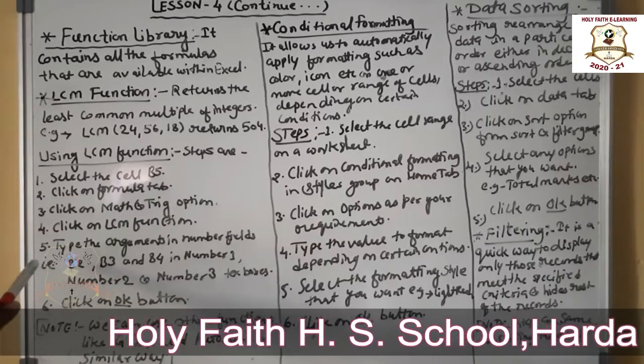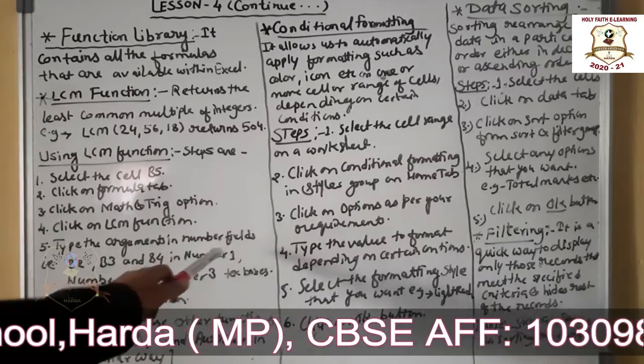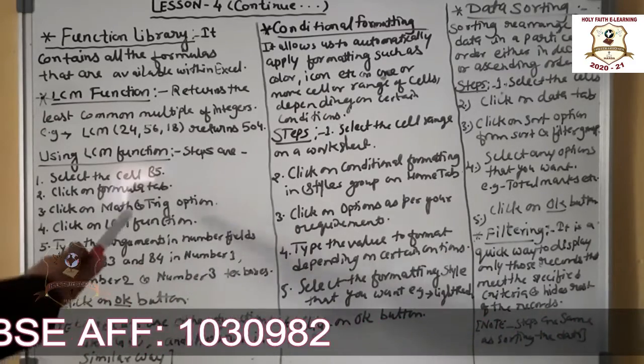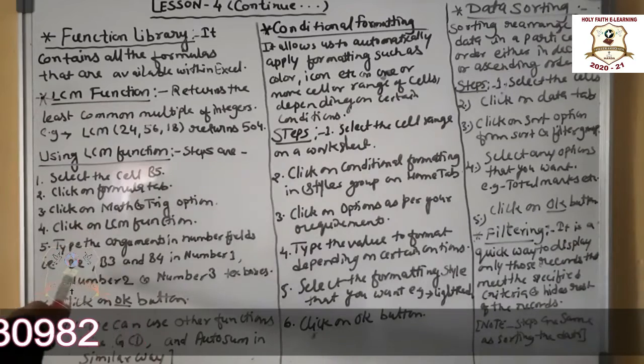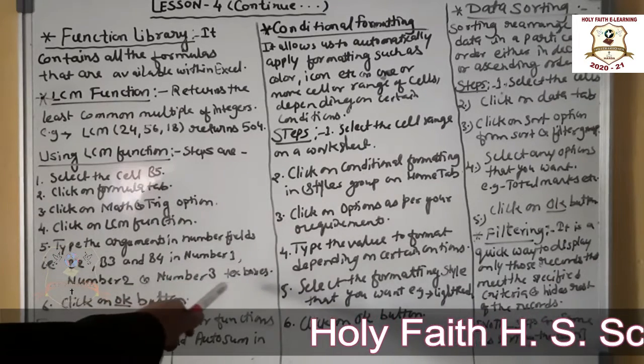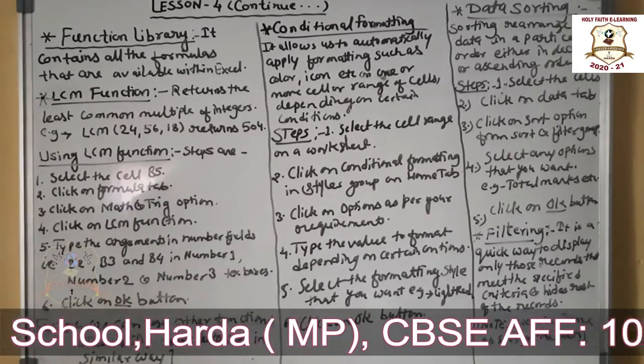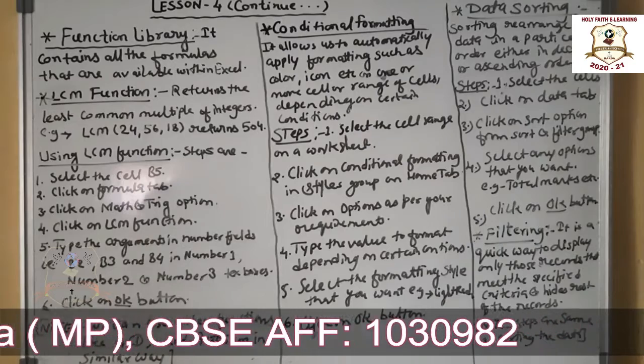Type the arguments in number fields B2, B3, and B4. As we have already selected B5, that is why we select these cells in the number one, number two, and number three text boxes. When you click on the LCM function option, a dialog box will appear asking for your arguments.